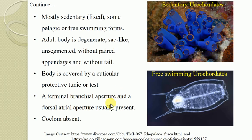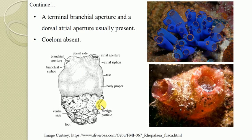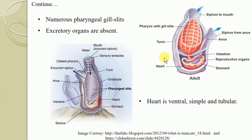Coelom is absent in this organism. Instead, an atrial cavity lined with ectoderm is present, which opens to the outside through the atrial aperture. Additionally, numerous pharyngeal gill slits are present — a large number of gill slits is again a characteristic feature of this organism.